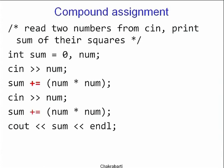Suppose the spec is that we have to read two numbers from cin and print the sum of their squares. We implement it as follows: 'int sum = 0' and num; we read num from cin, then say 'sum += num * num'. This is shorthand for 'sum = sum + num * num', provided for typing ease but also internally it may be slightly faster because sum is loaded into a register and something is added in place.